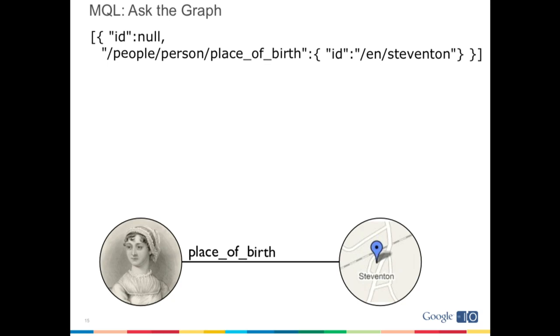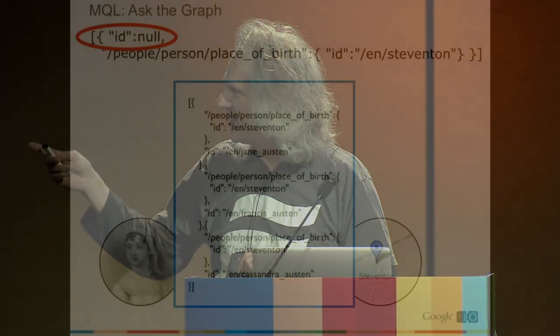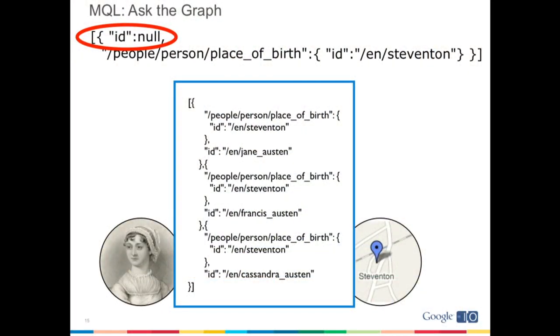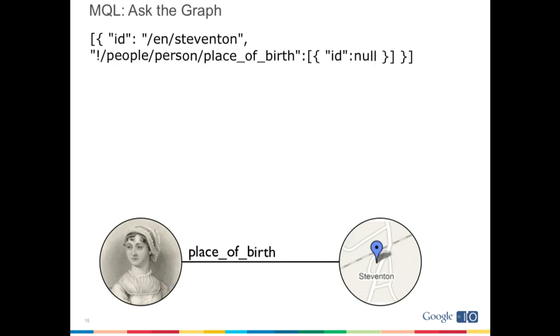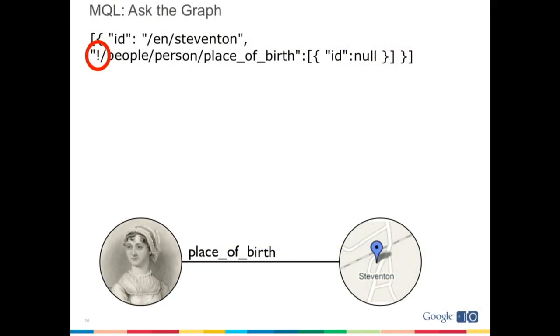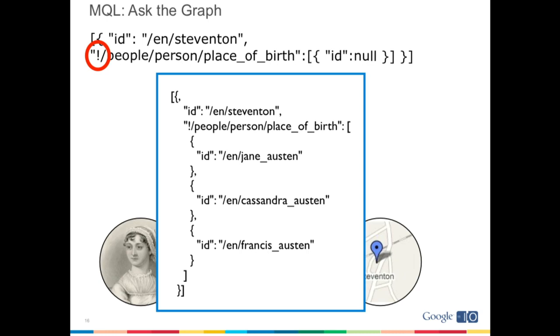Now I'm going to turn the query around. I know some people were born in Steventon and I'm curious who they are. I put this query in square brackets because I know I'm possibly going to get a list of people back. It turns out that Jane and her siblings were actually born there — not terribly surprising. We can also reverse the meaning of the /people/person/place_of_birth property using the bang operator. Starting on Steventon, I know there are links from other objects that are place_of_birth — and lo and behold, we get Jane and her siblings back as well.